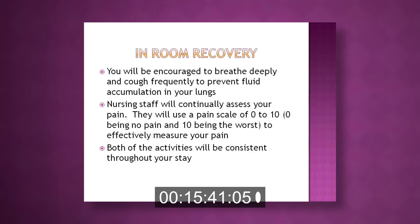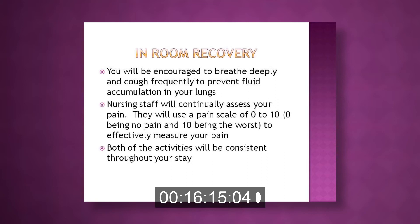In the recovery room, you'll be encouraged to cough and deep breathe frequently to move fluid around your lungs and prevent pneumonia. The nursing staff will continually assess your pain using a scale from 0 to 10, where 0 is no pain and 10 is the worst pain. They will give you pain medicine, then return to evaluate your pain level and whether it's controlled enough for you to do your exercises.